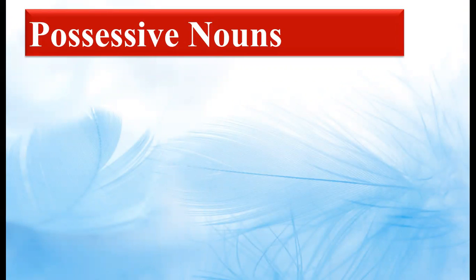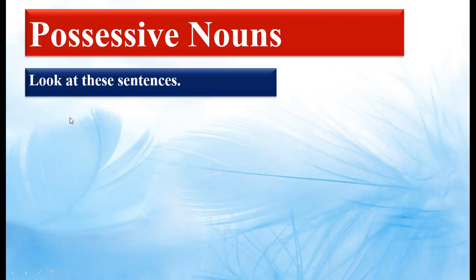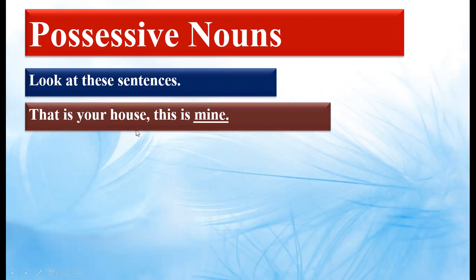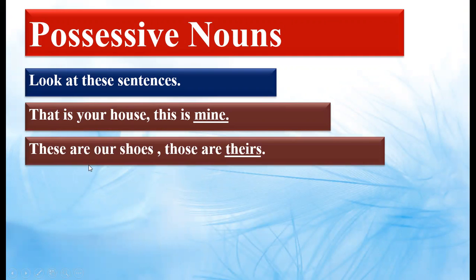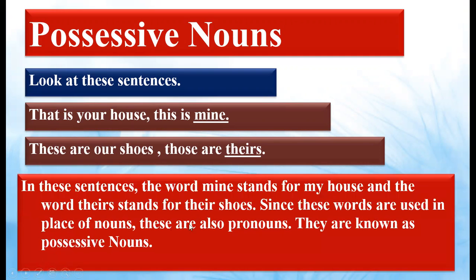Now let us study about possessive nouns. So what are possessive nouns? Look at these sentences: 'That is your house. This is mine. These are our shoes. Those are theirs.' The word 'mine' stands for 'my house', and 'theirs' stands for 'their shoes'. Since these words are used in place of nouns, they are also pronouns. They are known as possessive pronouns — that person possesses something; the thing belongs to them.